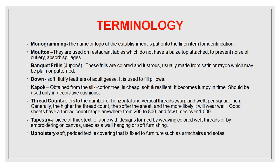Monogramming: The name or logo of the establishment is put onto the linen for identification. Usually this comes as an imprinted item from the manufacturer; we do not actually do the embroidery or stitching of the logos. A molten is used on restaurant tables which do not have a base — a base helps prevent the noise of cutlery and absorbs spillages. If there is no base topping fitted on the restaurant table, a molten is used instead.